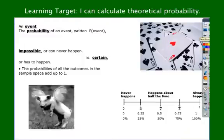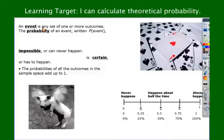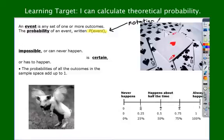A couple more. An event is just something that happens — it's a set of one or more outcomes, one or more things that could happen. The probability of an event — I want you to highlight or underline this part — this is the notation you need to use. Notice the root word: note. This is how we write about probability.